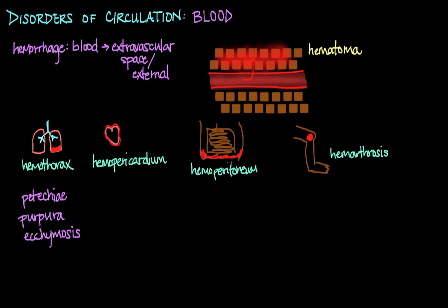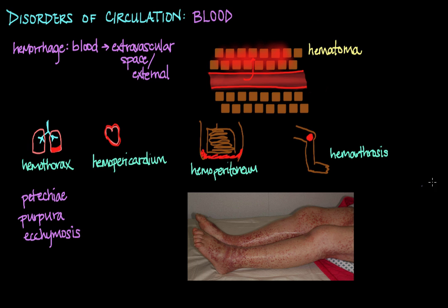But first, let me bring up a picture that will help you to visualize what each of these terms means. All right. So here is a picture of a patient's legs. And you can see the little hemorrhages all over the skin here. Now, the smallest of these dots, say here, you can see the smallest ones that are 1 to 2 millimeters, those are petechiae.